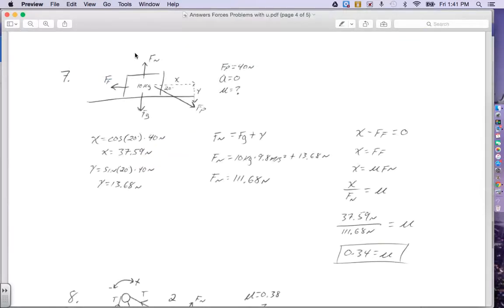Got to make sure we have all of our forces drawn correctly. Normal force is upward, force of gravity is downward, our force of push goes down at an angle, and friction goes to the left. The numbers given in the problem: the force of push is 40 Newtons. There is no acceleration because it's moving at a constant speed. Constant speed means it's not getting faster or slower, so there's no acceleration, and we're trying to find the coefficient.